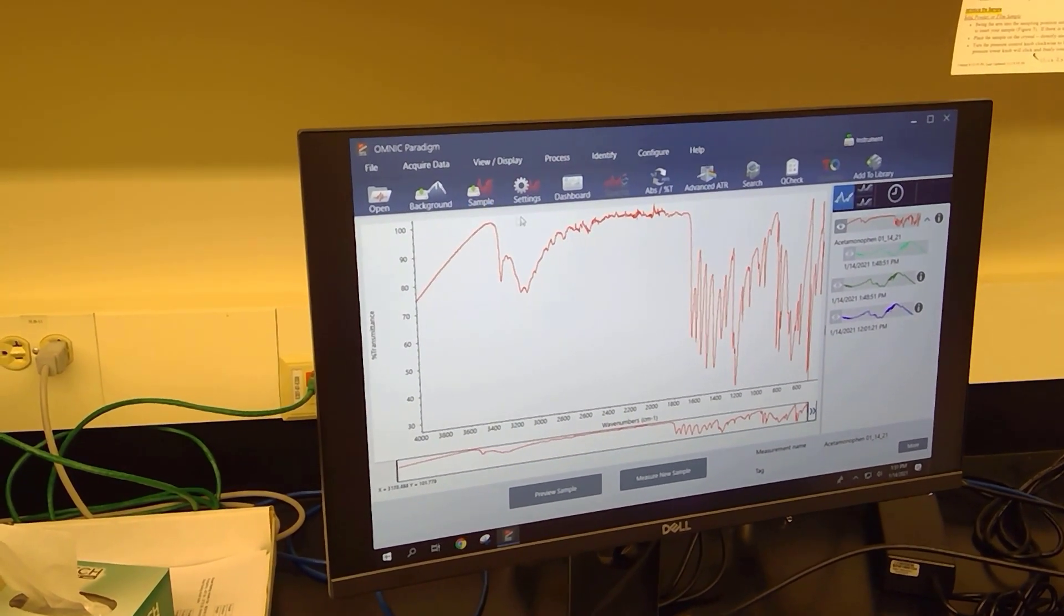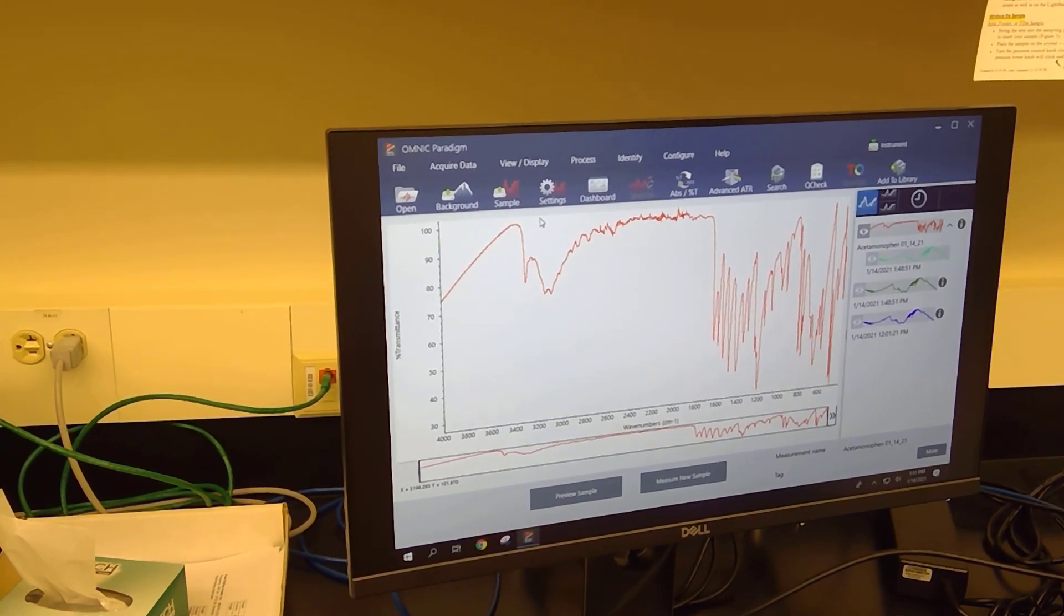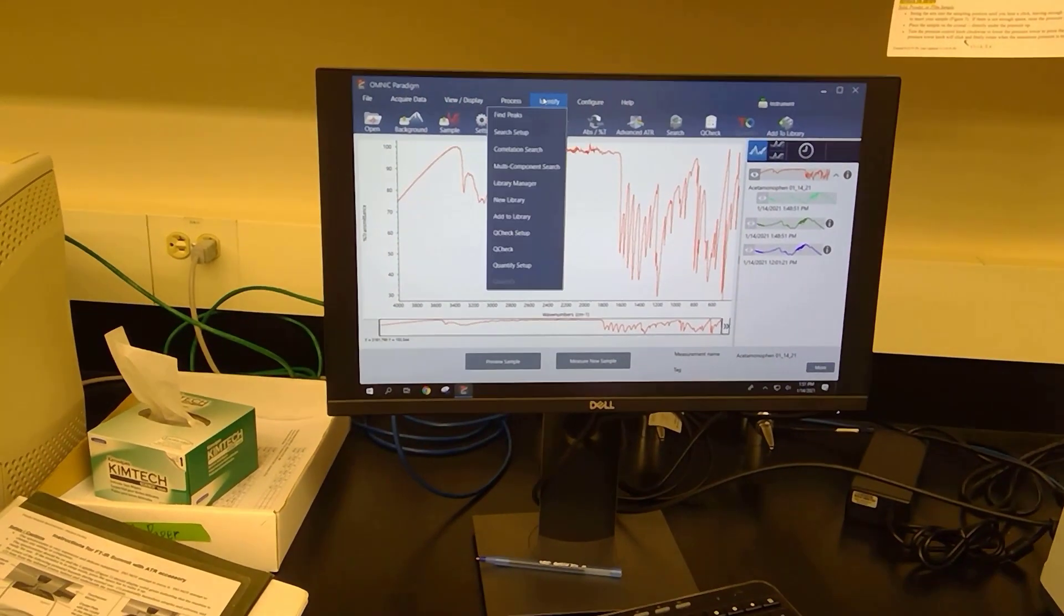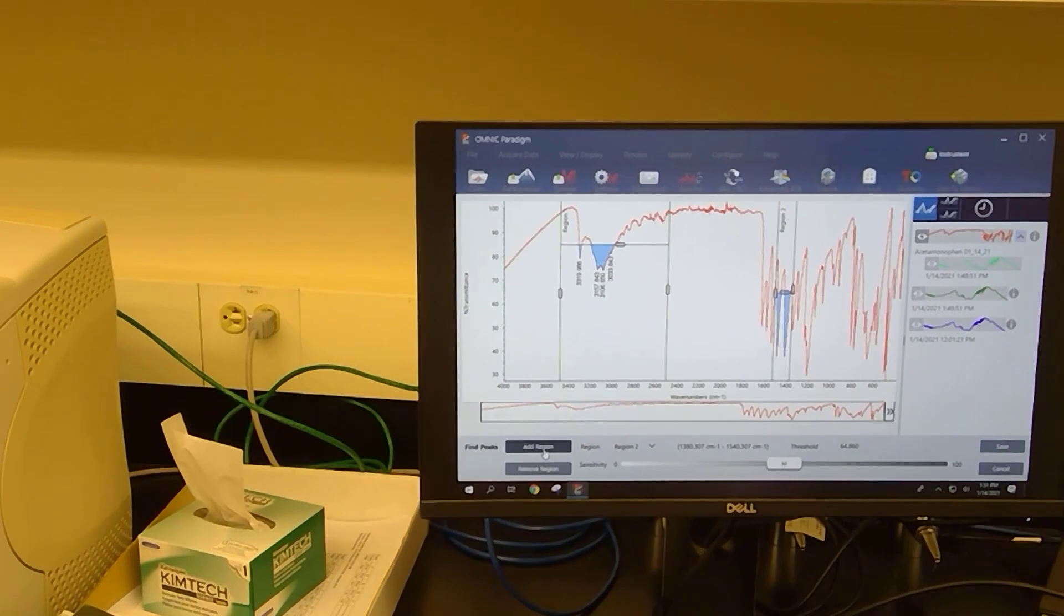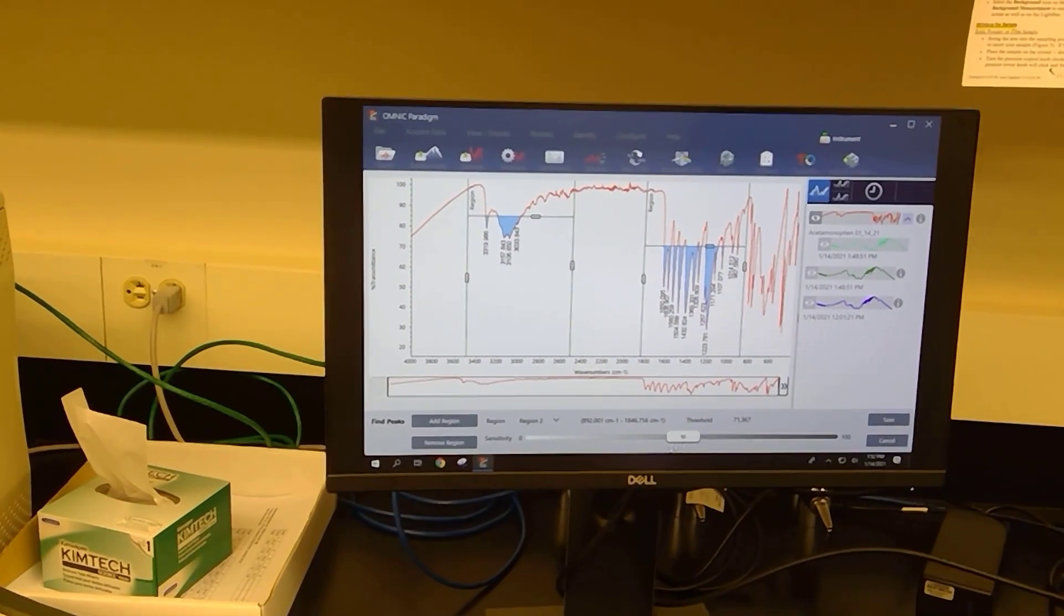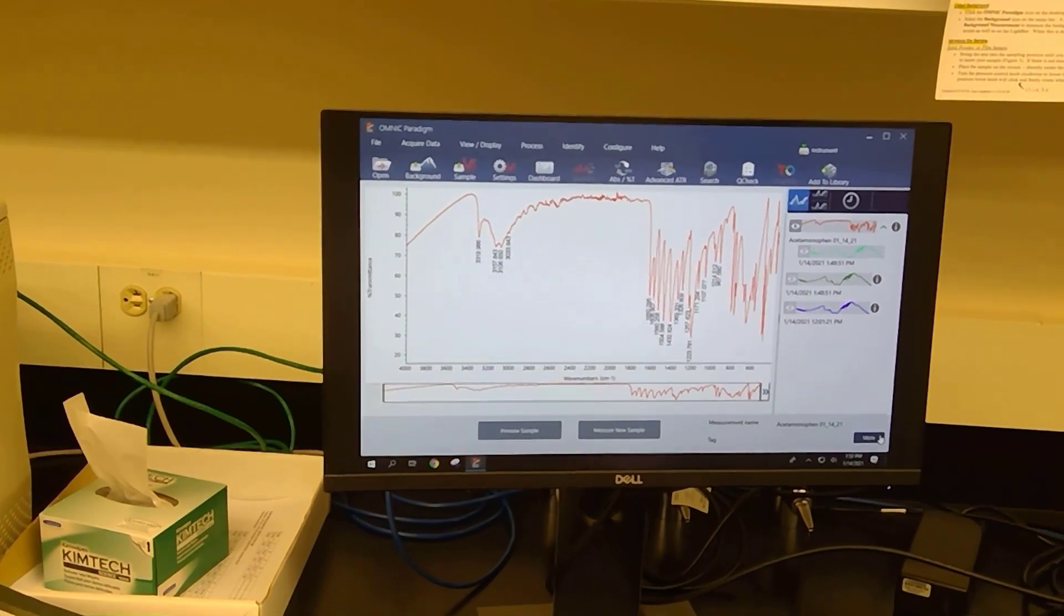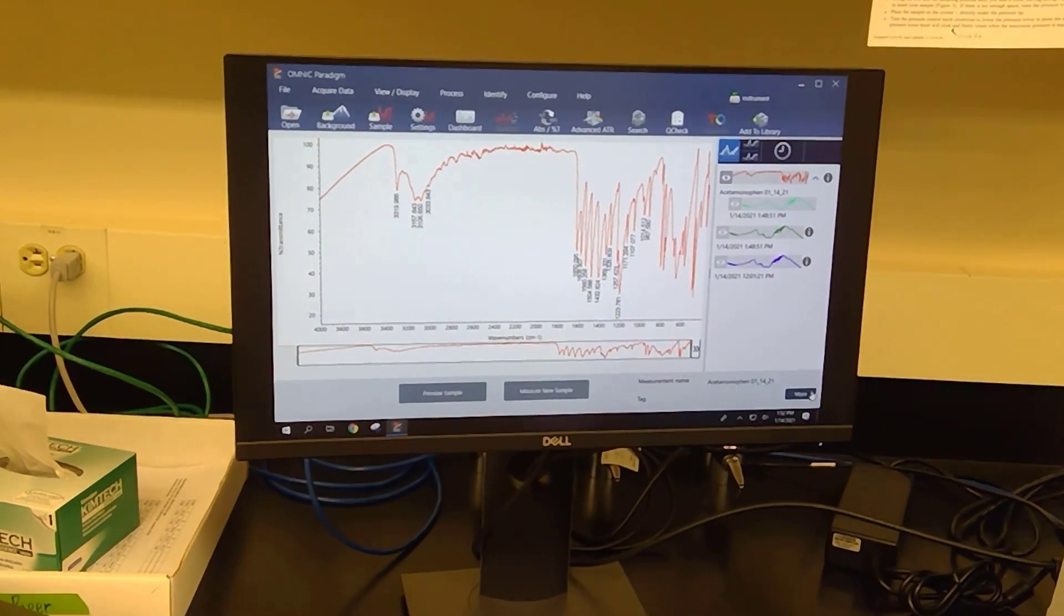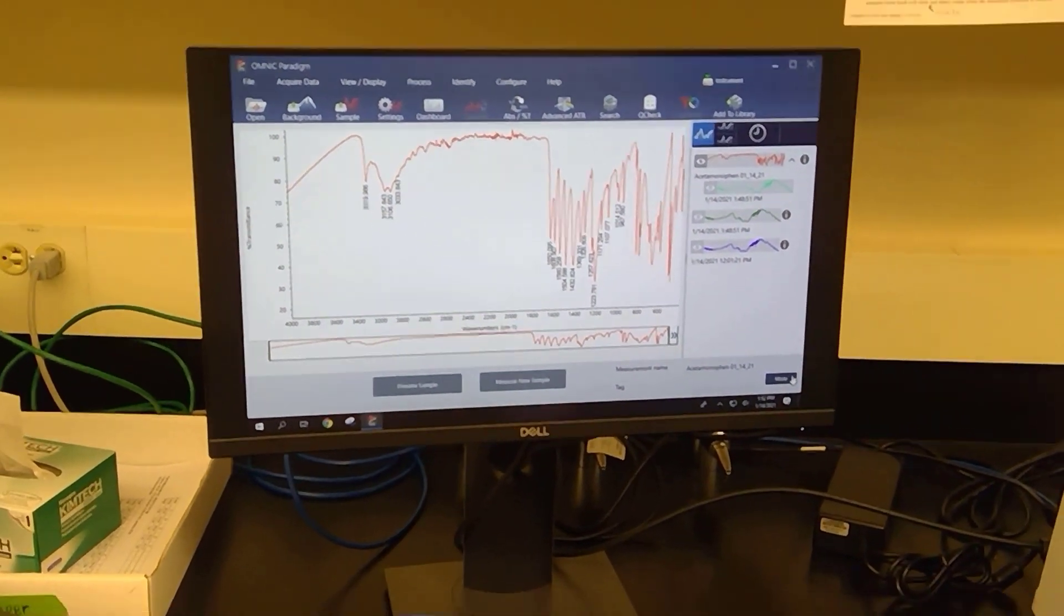Now I'm going to get some regions read for us. Let's get some identifying areas here. That's good, I'm going to add a second region. Threshold looks good, I'm going to click save. This is our infrared of acetaminophen. I'm going to email this information to myself and be able to post it on our website.